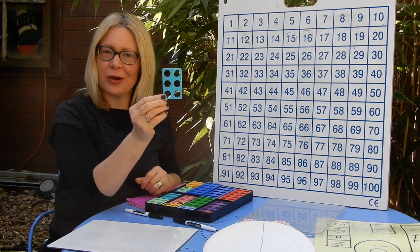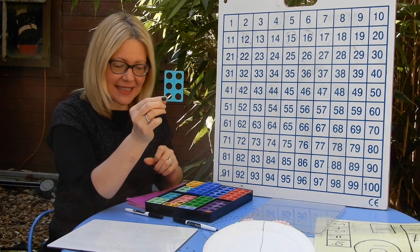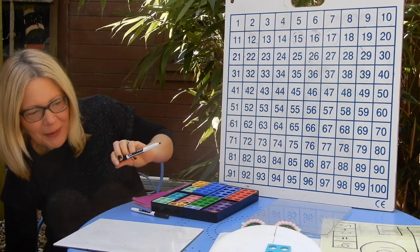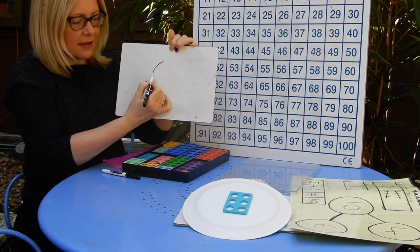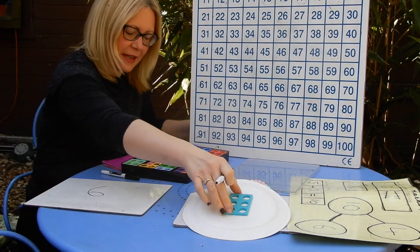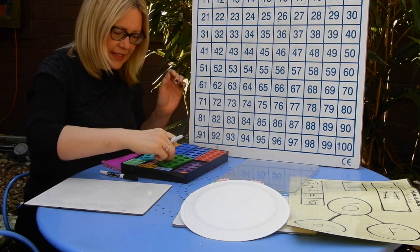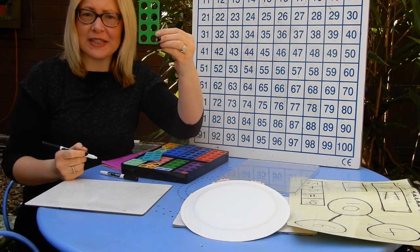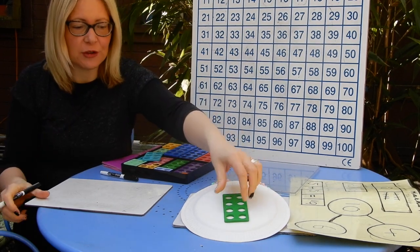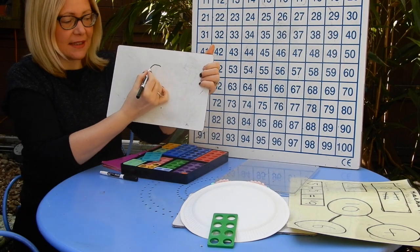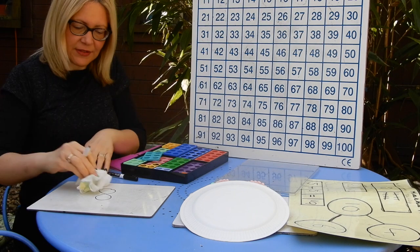My first piece of Numicon — have a quick count of the holes, or pause the video. That is number six. Let's put the six piece away. Now this one — have a count of the holes if you're not sure, then write it on the board. That piece of Numicon is number eight — the number that looks a bit like a snowman.